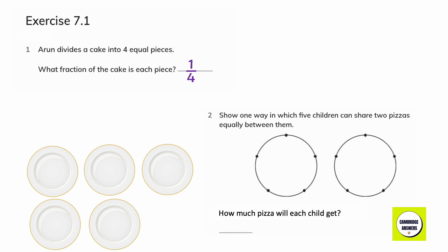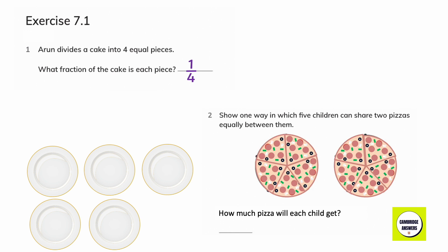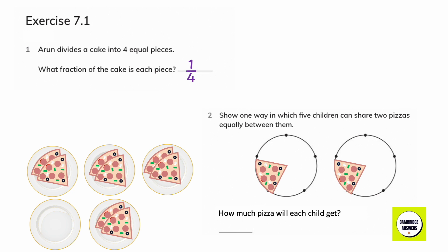Show one way in which five children can share two pizzas equally between them. 1st child, 2nd child, 3rd child, 4th child, 5th child. How much pizza will each child get? 2 upon 5.